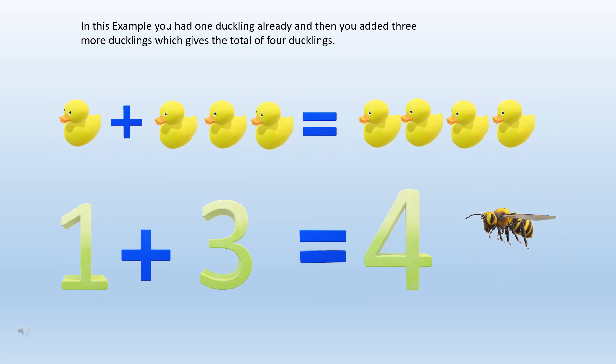In this example you had one duckling already and then you added three more ducklings which gives the total of four ducklings.